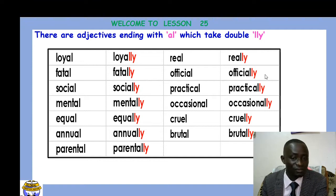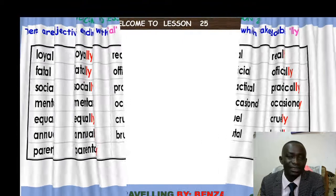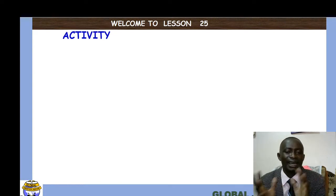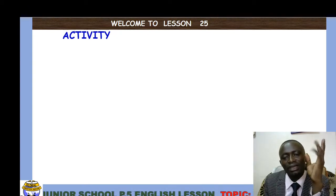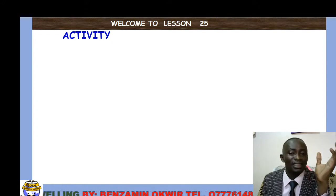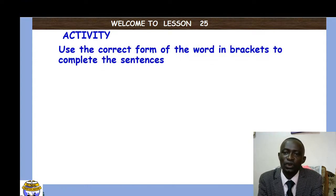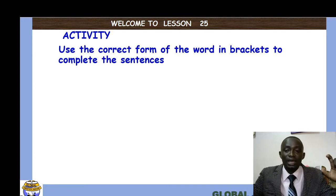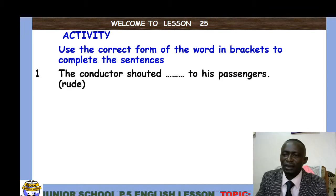Practice constructing sentences using adverbs time and again until you master them. Remember, we are to answer questions being tested in adjective form and adverb form. Your attention is to know what is being described — a noun can be a person, a plant, an animal, or a non-living thing. Now look at this activity: use the correct form of the word in brackets to complete the sentences.